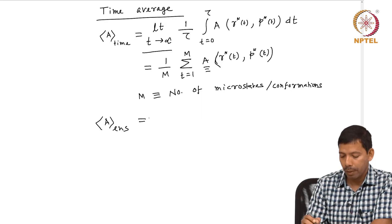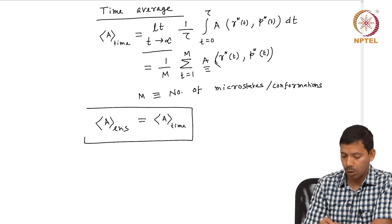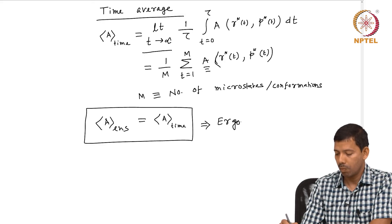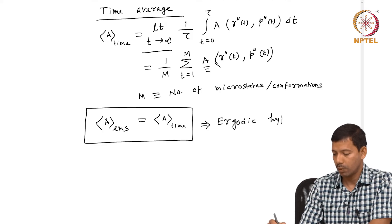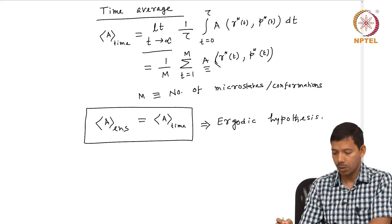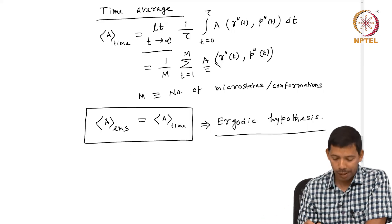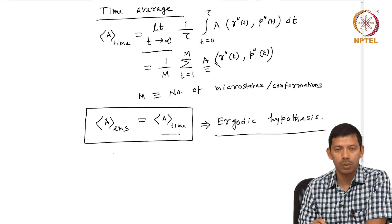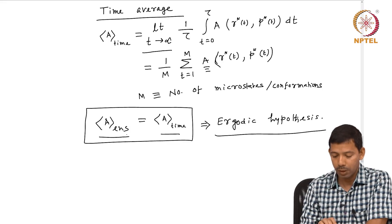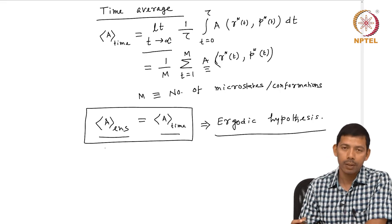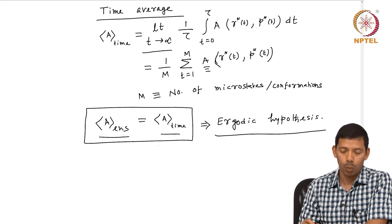A situation where the ensemble average is equal to the time average is called the ergodic hypothesis. The ergodic hypothesis states that we should explore our system for a long enough time, and then the time average should be almost equal to the ensemble average, because the ensemble average is the ultimate target where we explore all possible microstates and take the average over all of them to get the exact average value of the thermodynamic quantity A.